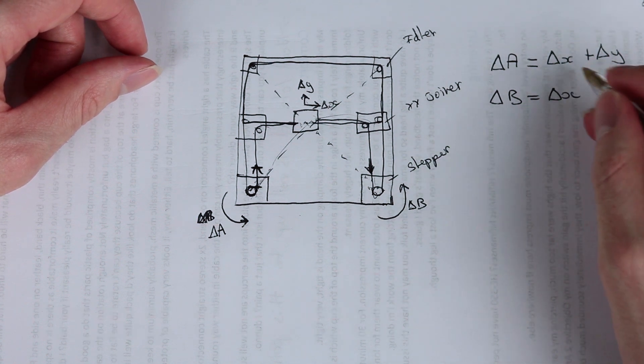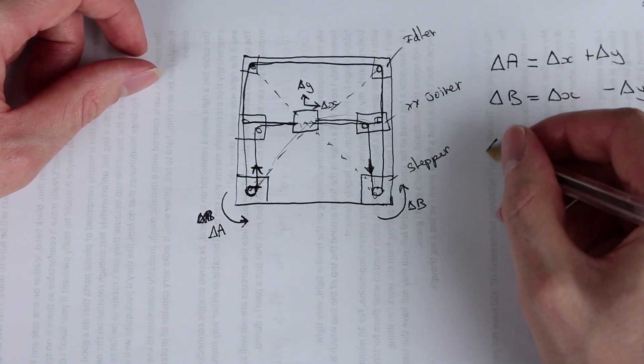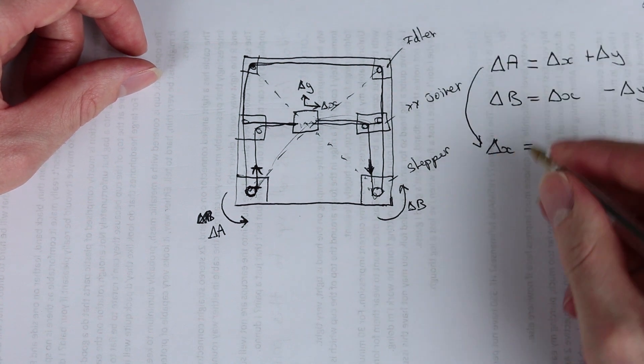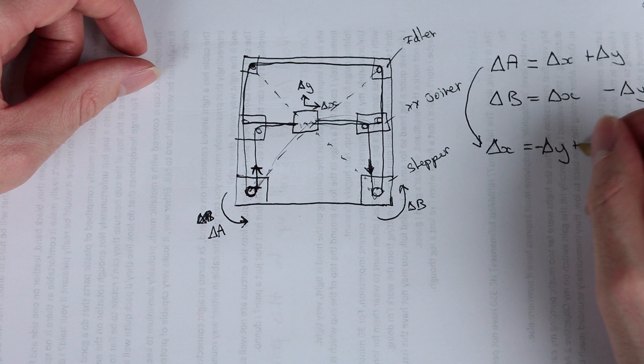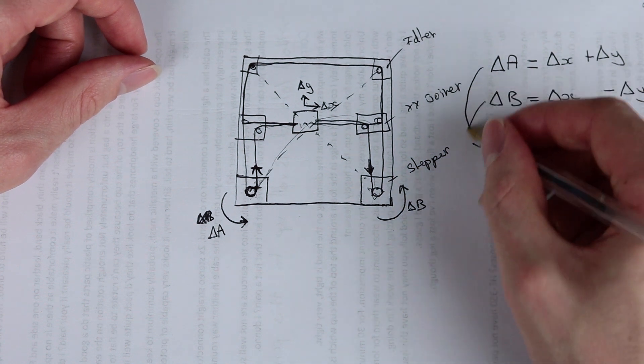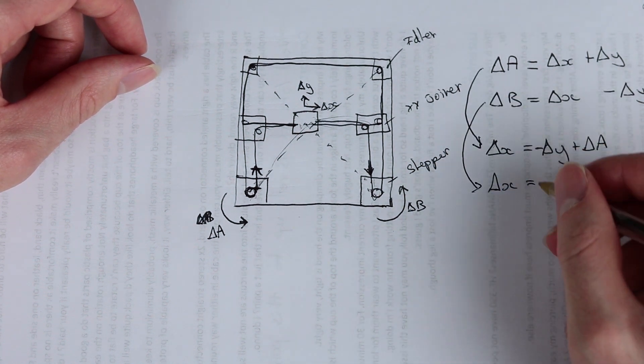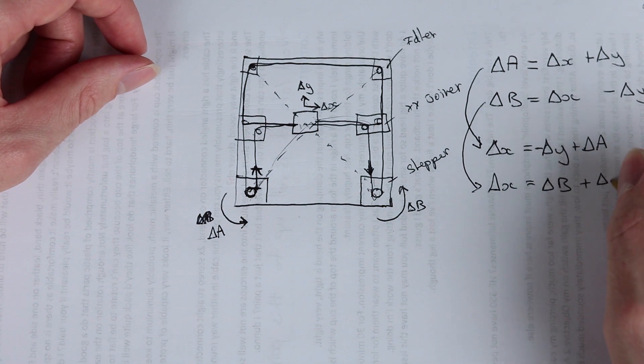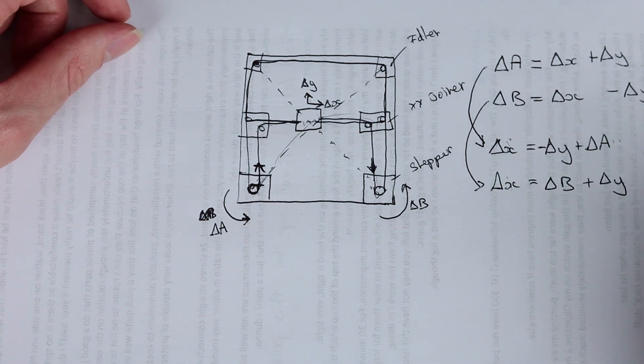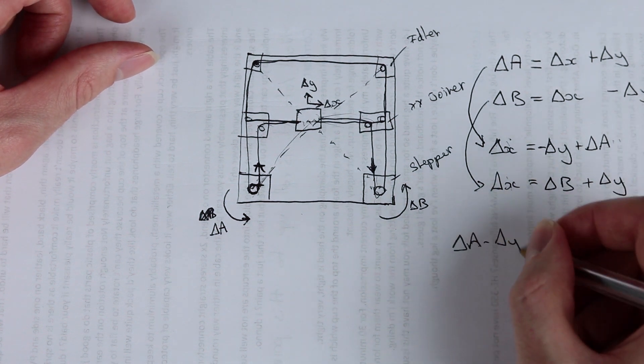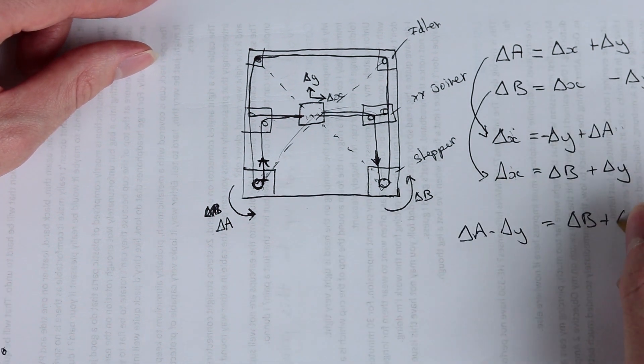So let's say we'll get rid of the delta X's, so we'll make them delta X. Delta X equals delta A minus delta Y. And for this one, delta X equals delta B plus delta Y. So since these are both equal to delta X, these expressions must both be equal. Delta A minus delta Y equals delta B plus delta Y.